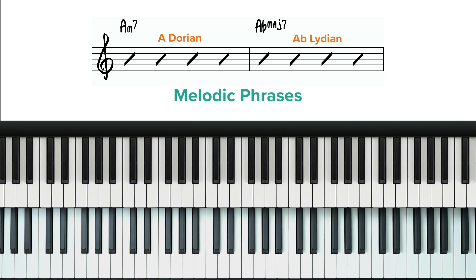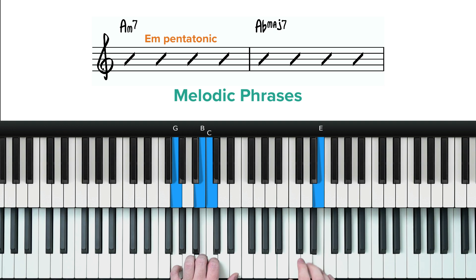However, thinking in that way may be a little complicated if it's new to you. So a slightly easier approach would be to think in terms of pentatonics. You could play an E minor pentatonic over the A minor chord. Or even a blues scale.